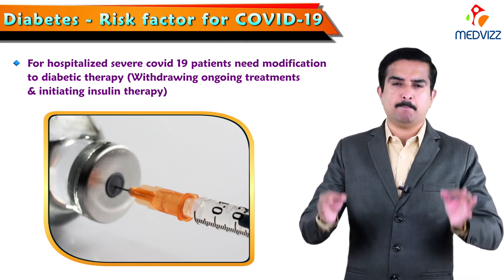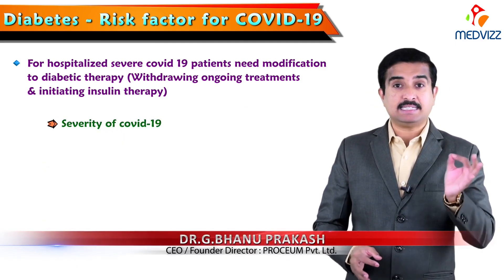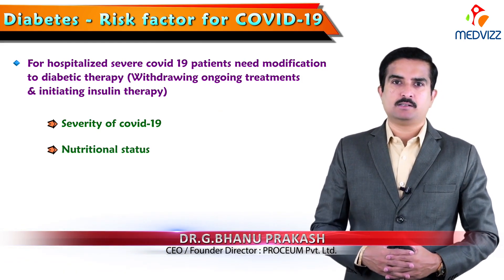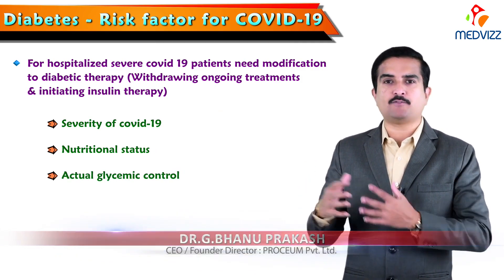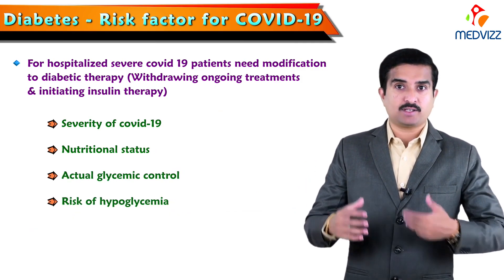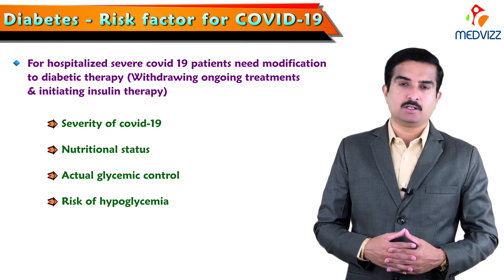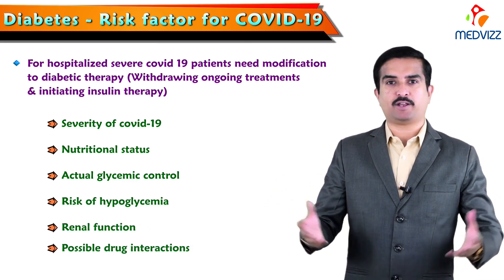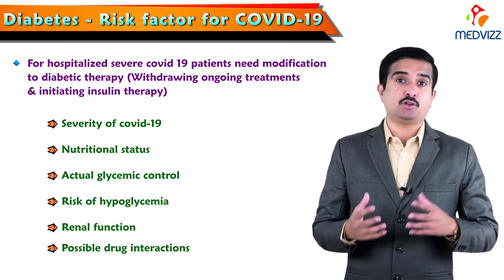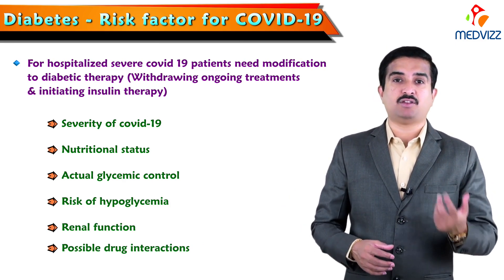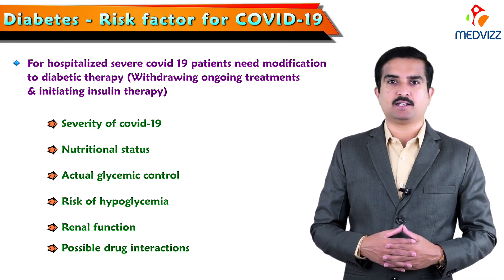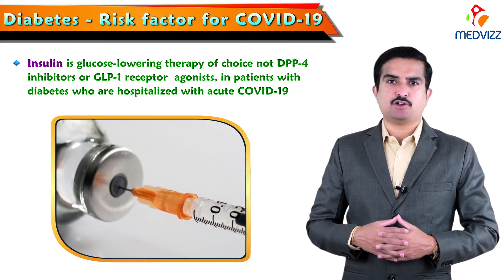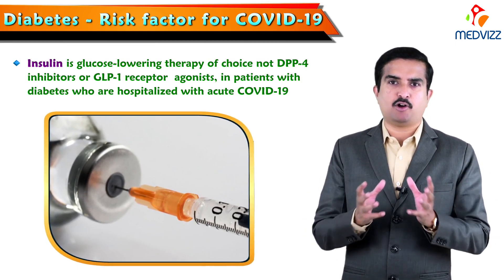Such a decision should be based upon the severity of COVID-19, the nutritional status of the individual, actual glycemic control, the risk of hypoglycemia, renal function of the patient, and possible drug interactions. Based on all these factors, treatment decisions can be made by the treating physician.